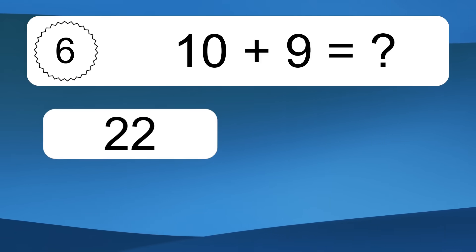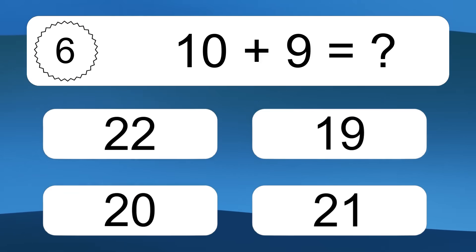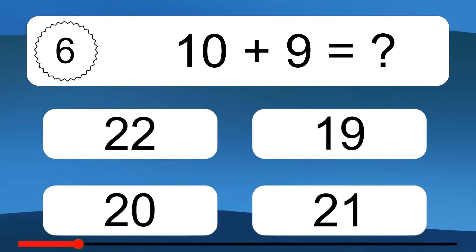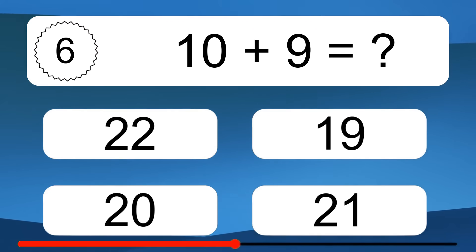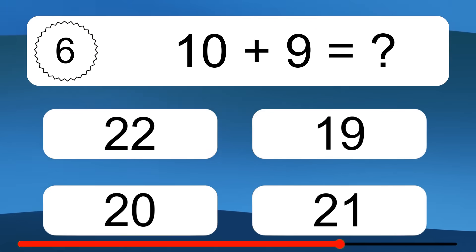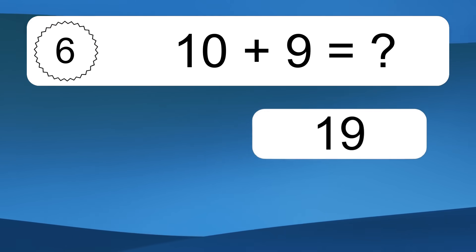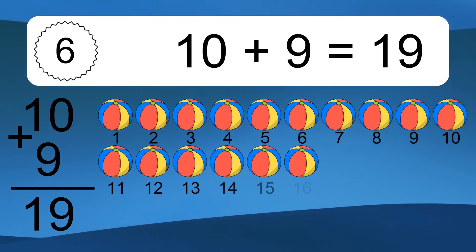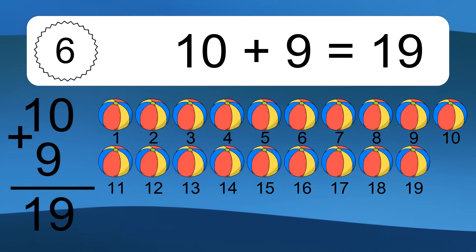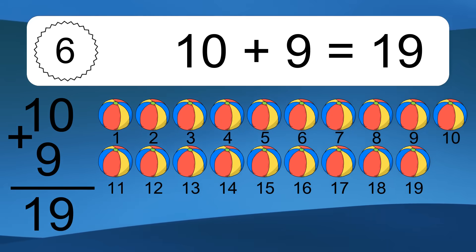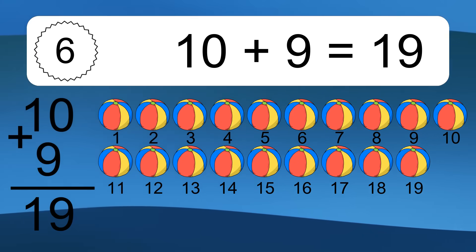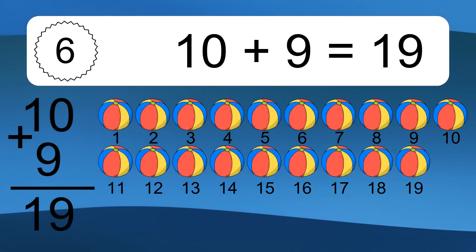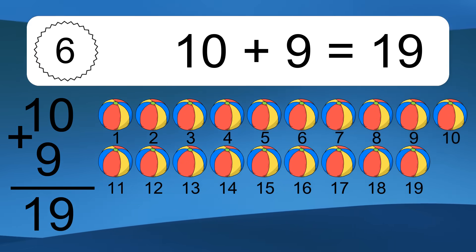10 plus 9 equals what? Let's count it: 1, 2, 3, 4, 5, 6, 7, 8, 9, 10, 11, 12, 13, 14, 15, 16, 17, 18, 19.